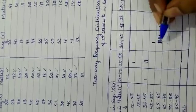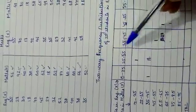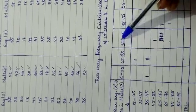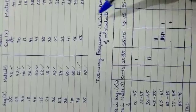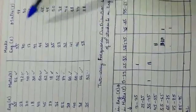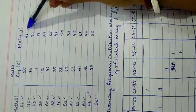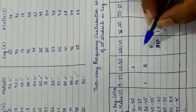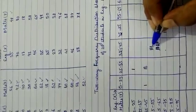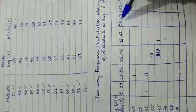Next is X=35 and Y=52: X=35 is in 35–45 and Y=52 is in 45–55, one more tally mark there. Then X=35 and Y=48: X=35 is in 35–45 and Y=48 is in 45–55. Then X=70 and Y=80: X=70 is in 65–75 and Y=80 is in 75–85, one tally mark there.